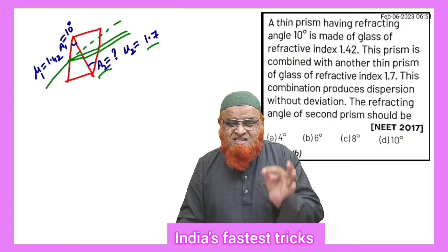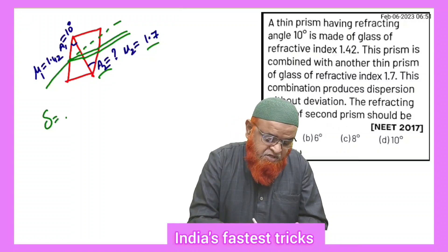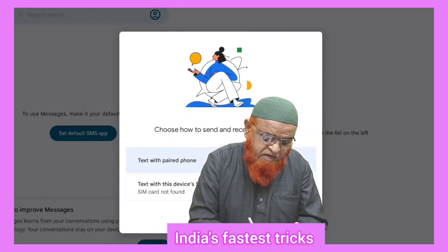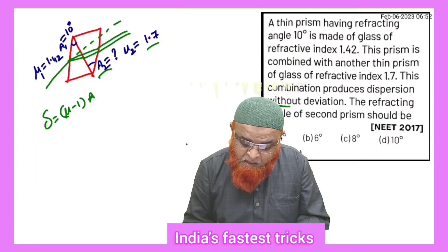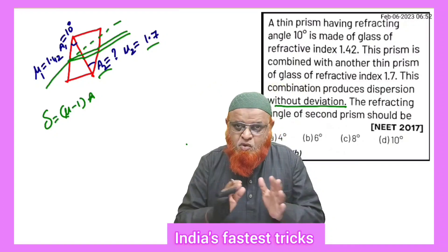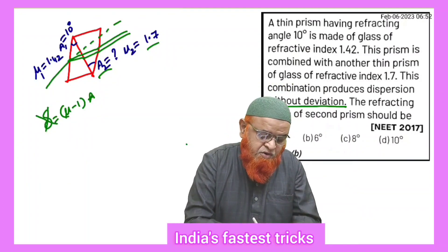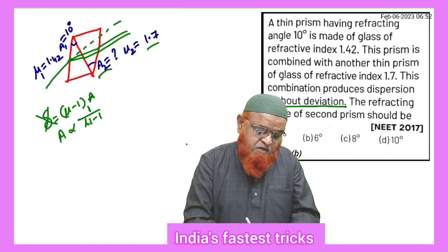So what is the deviation formula for a thin prism? The deviation formula for a thin prism is: delta equals (mu minus 1) into A. But in this problem it is given that there is no deviation — deviation is going to be constant. Therefore A is inversely proportional to (mu minus 1).